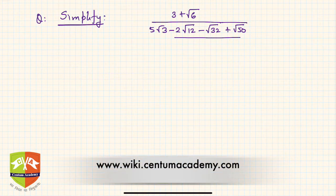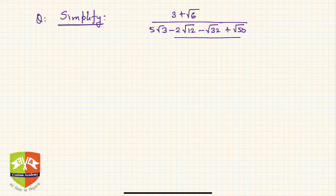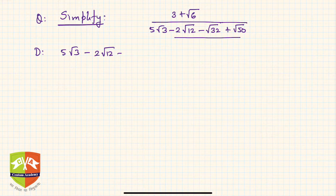In the denominator there are multiple terms with different numbers underneath the root, and all the numbers are unequal. So let us first simplify the denominator. The denominator is 5√3 minus 2√12 minus √32 plus √50.